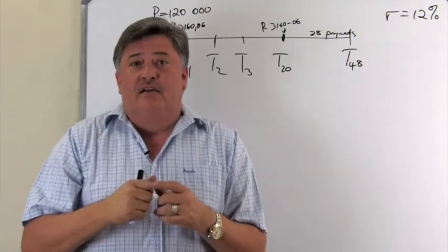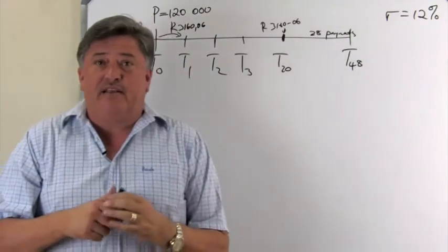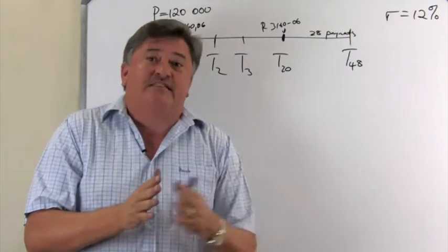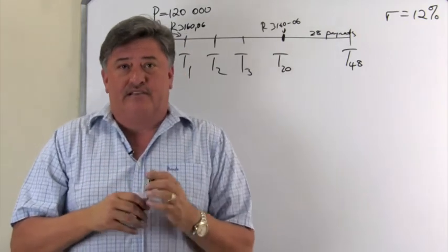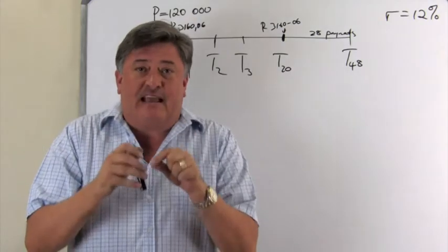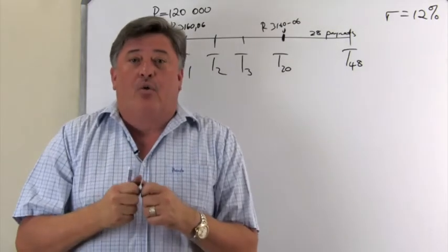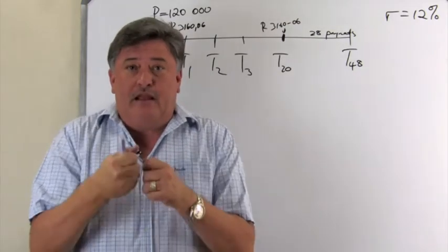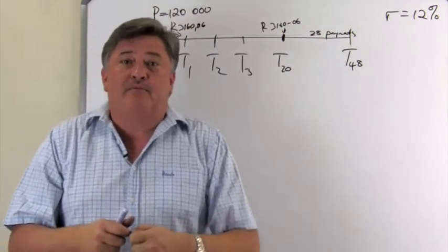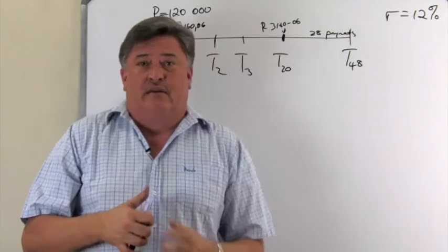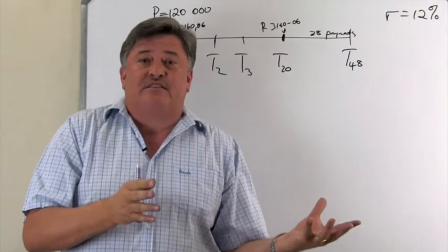That is still what is outstanding on the loan. But that is the outstanding balance of the loan if she's going to continue with the payments. That is, she just wants to know what I still owe them. But what she really wants to know here is, what is the balance outstanding here? So that means if I want to pay off the loan today, what must I pay?